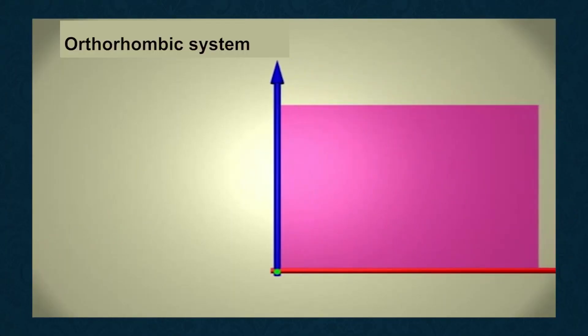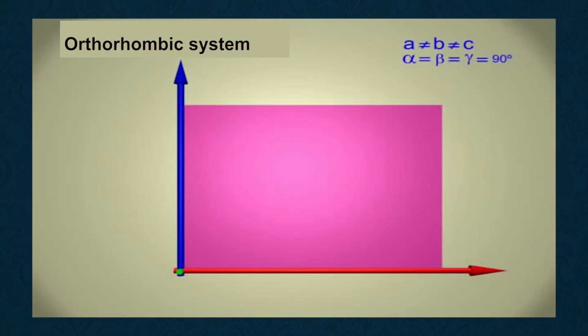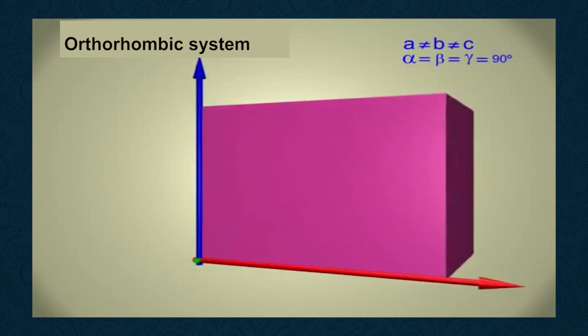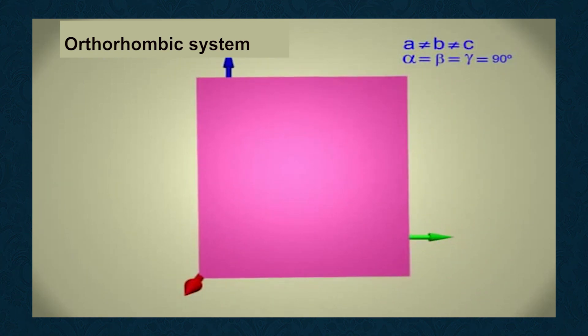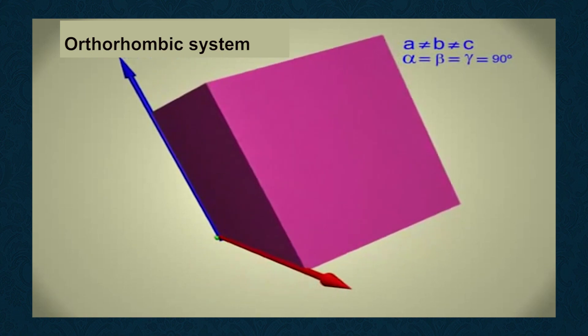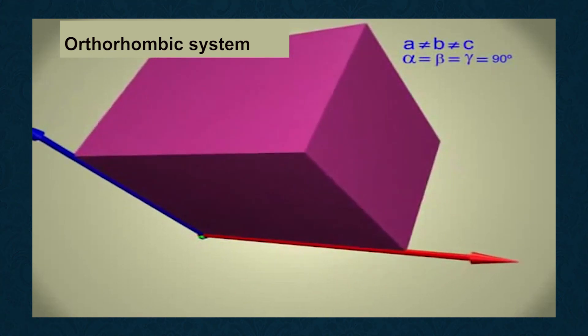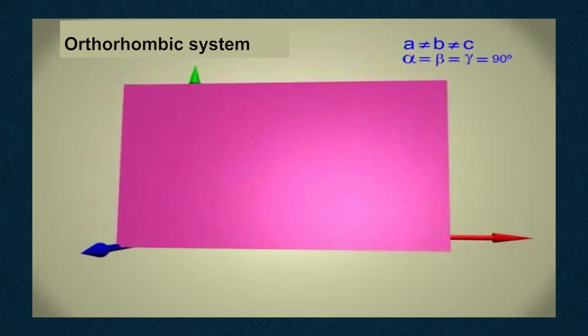Second, orthorhombic system: Three unequal axes A, B, and C, all perpendicular to each other. A ≠ B ≠ C, alpha = beta = gamma = 90 degrees.